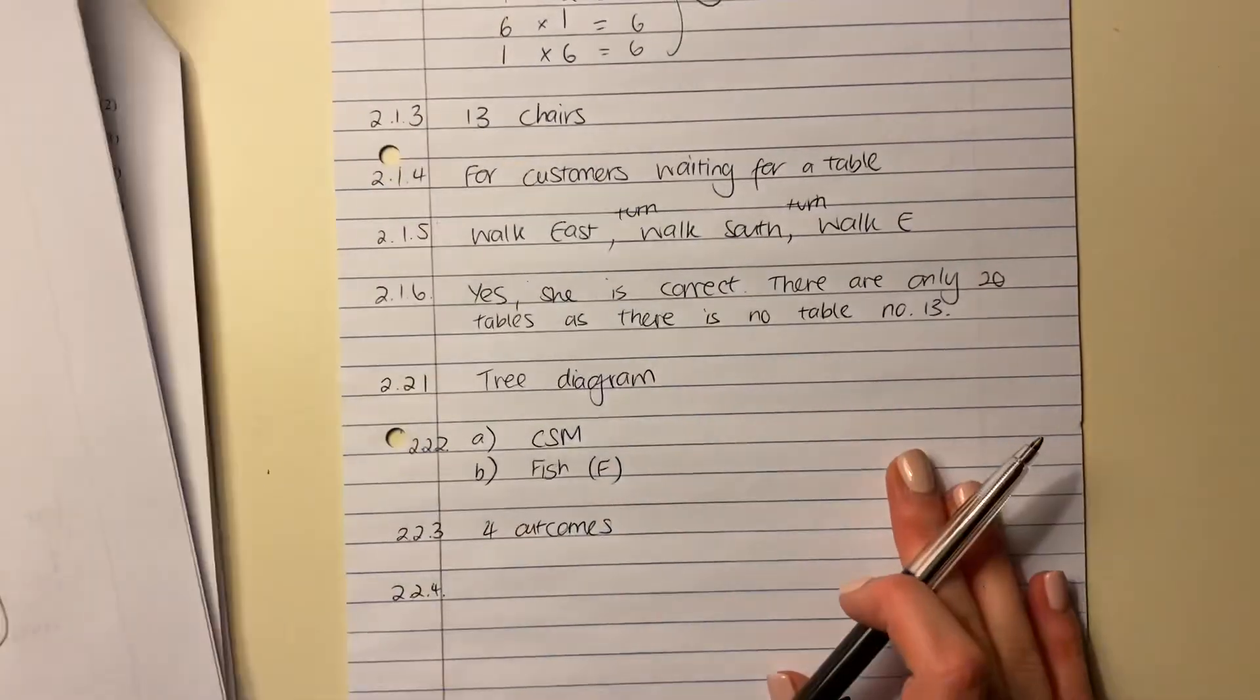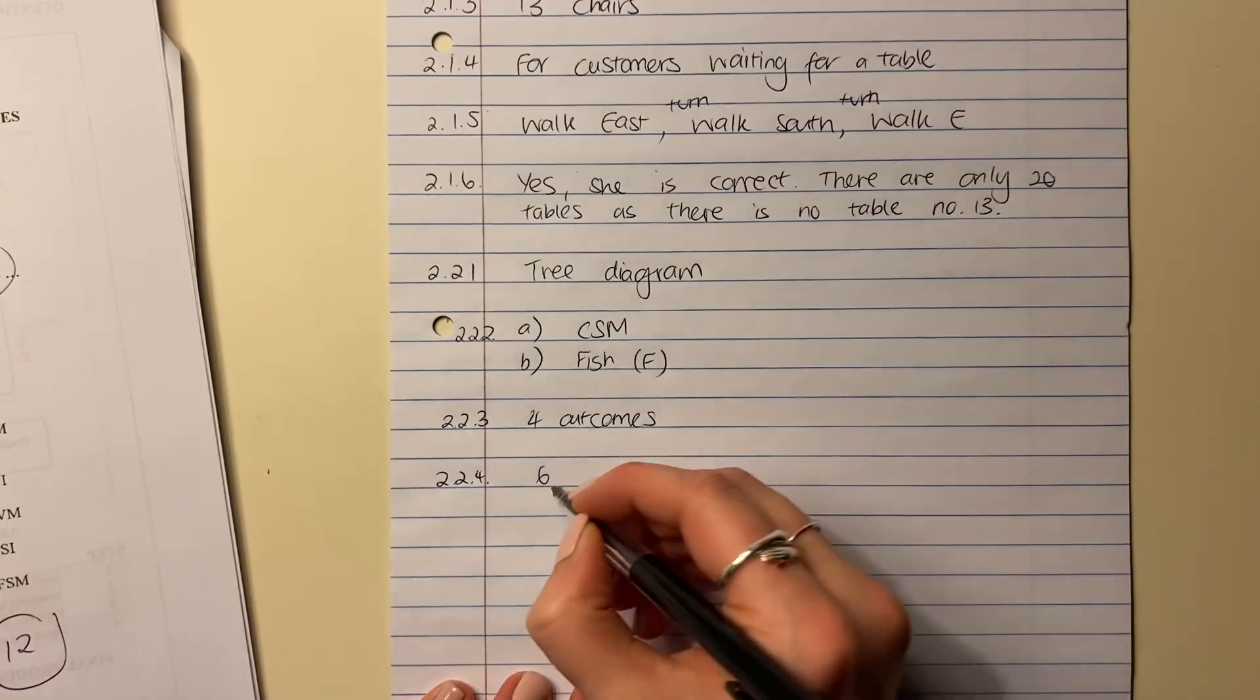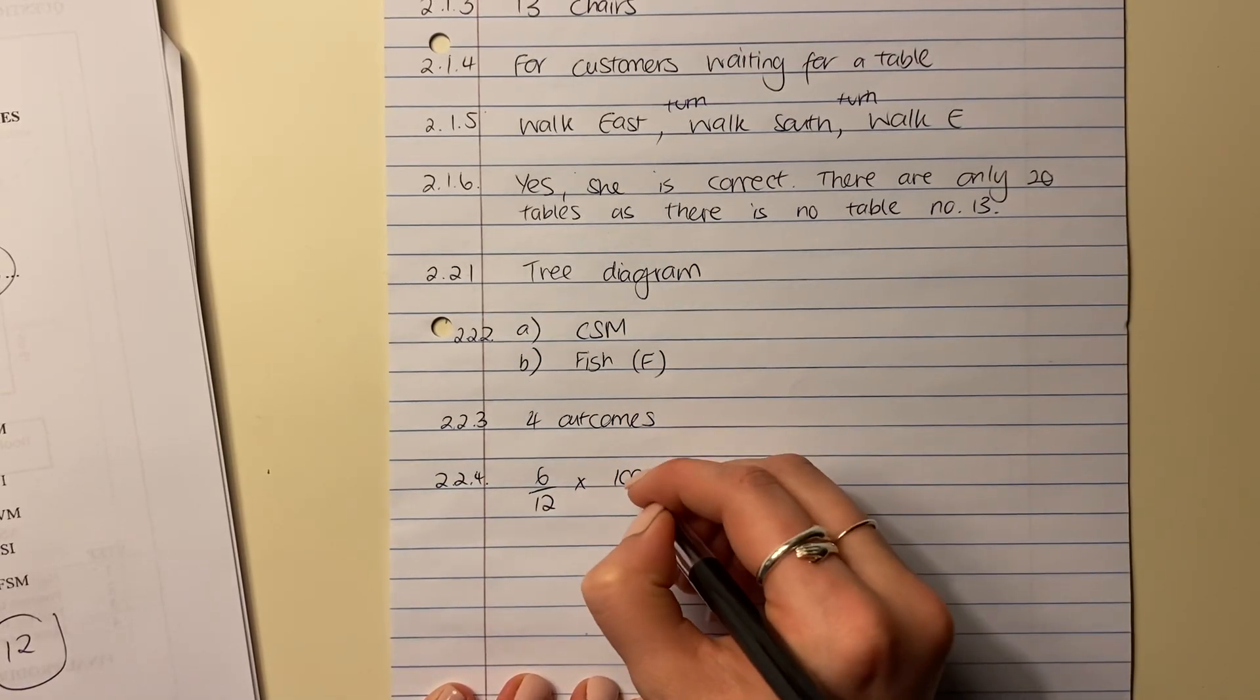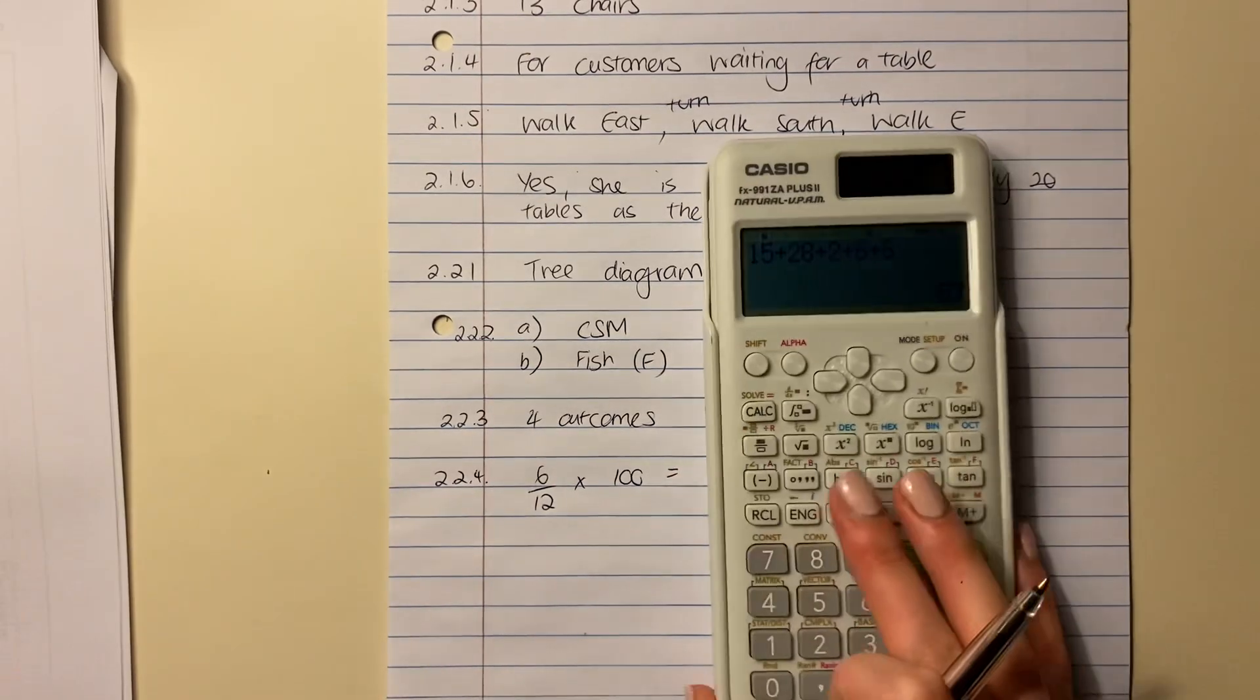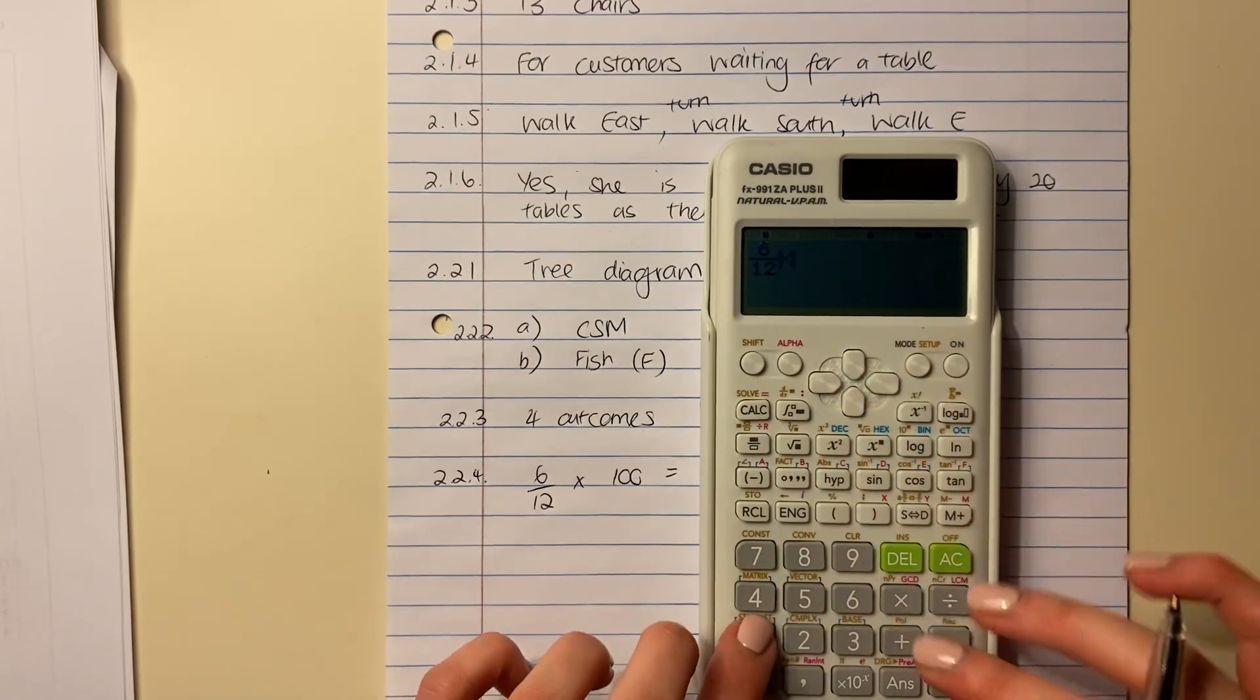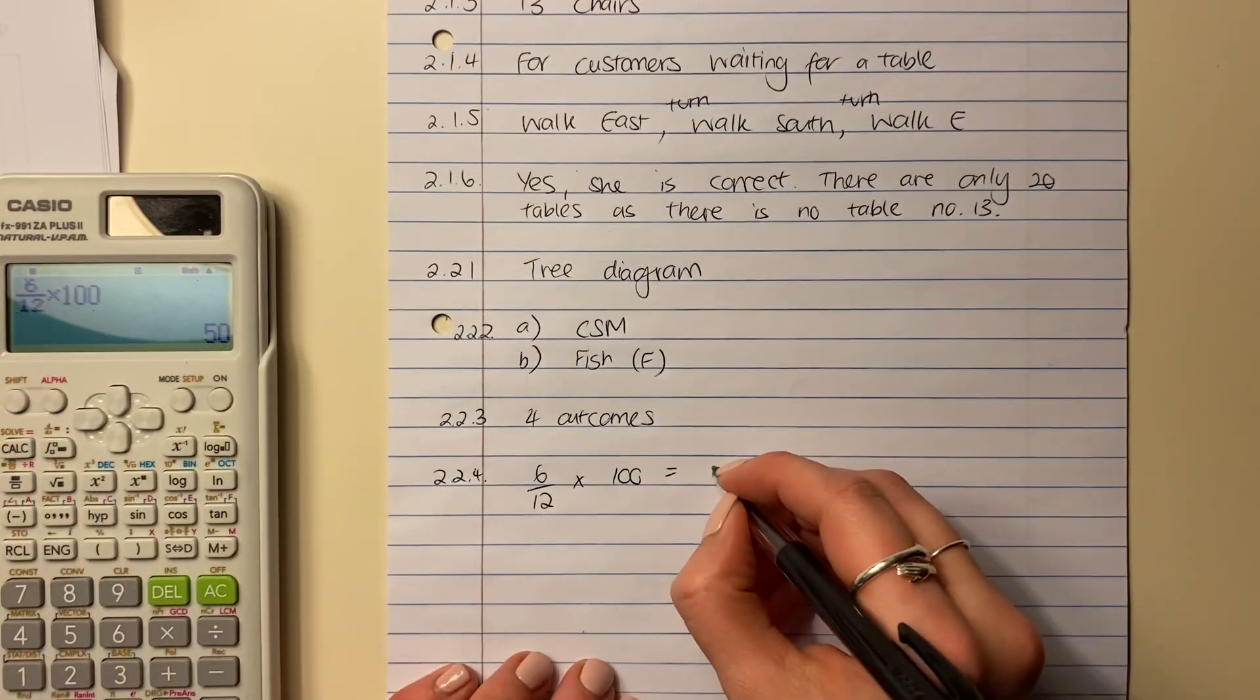So what we're going to say is we need to work out the probability. Six is how many ways we can get what we want, but there's 12 outcomes in total. How do we get a percentage? We always times it by 100. Pop this into your calculator. You can do it in your head as well, but if you're not comfortable doing that, that's okay.